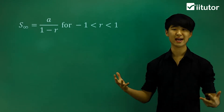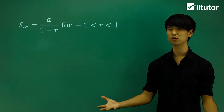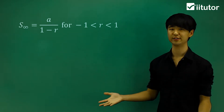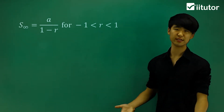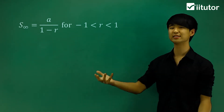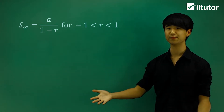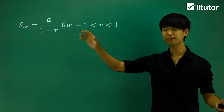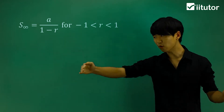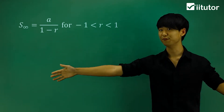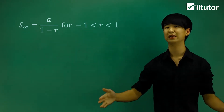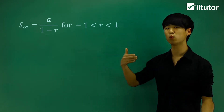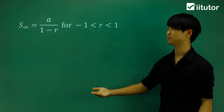We're going to be taking a closer look at series and sequences, and particularly we're going to be looking at geometric series. In geometric series, we have this thing called a sum to infinity. So as my geometric series goes down, we're going to try and find when we add all these terms that go to infinity, that will give me some sort of limiting sum. In a geometric series, what is the limiting sum for that series?